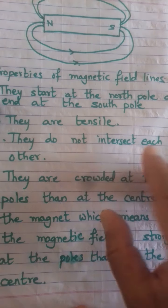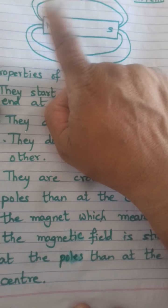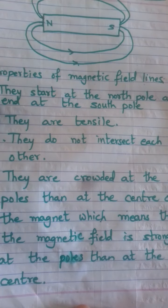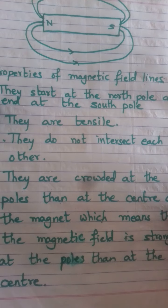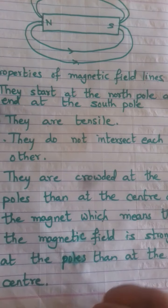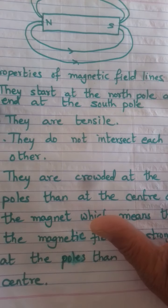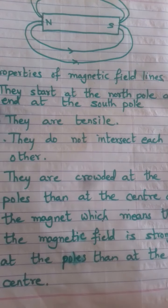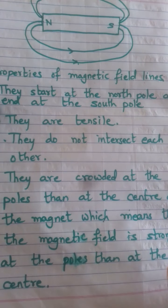The magnetic field lines are closer together at the north and south poles than at the center, meaning the magnetic field is stronger at the poles and weaker at the center. To revise: first, field lines start at the north pole and end at the south pole; second, they are tensile; third, they do not intersect each other; fourth, they are crowded at the poles, so the magnetic field strength is more at the poles than at the center.